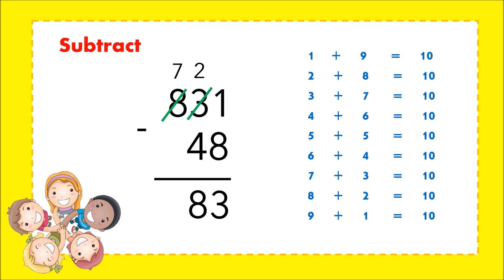Then just bring down 7. Therefore, the difference of 831 and 48 is 783. There is one to try on your own and let's see if we have the same answer later.